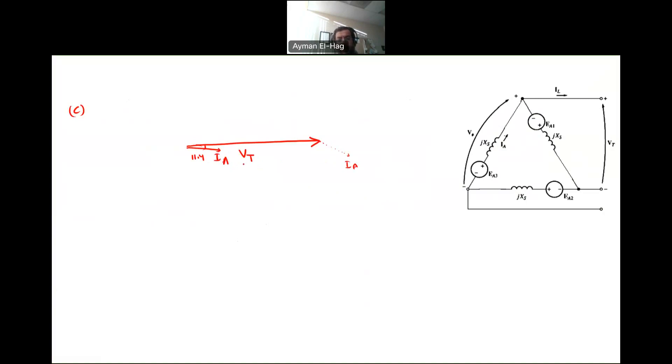Then we want to find the IA times jXs. Remember, your EA is equal to the Vt plus IA times jXs. So this will have a 90 degree phase shift. So this will be 90 degrees of this. This is your IA times jXs. Now, the Vt plus this will give you your EA. This is your EA. And the angle here, as we know it, is the power angle or the torque angle, which is equal to 18.